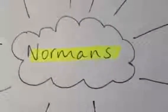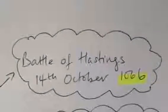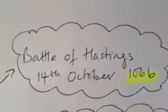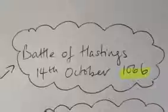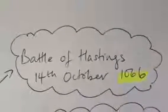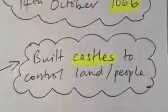Let's just get started with the Normans. On 14th of October 1066, William Duke of Normandy beat Harold Godwinson in battle at the Battle of Hastings and became the new King of England. So what kind of things did the Normans introduce? Well, the first thing they did is they built castles to control the land and the people.